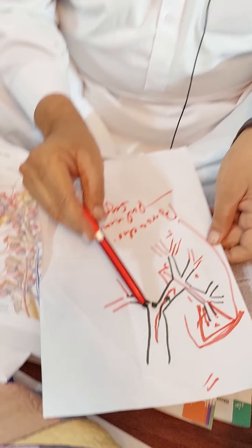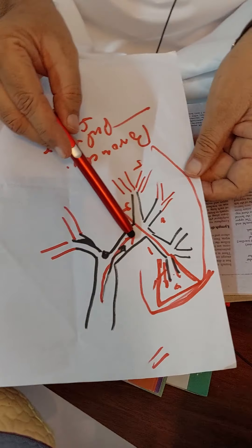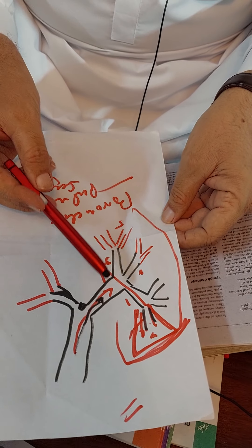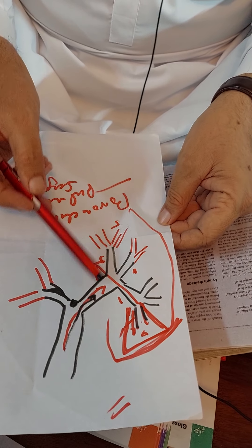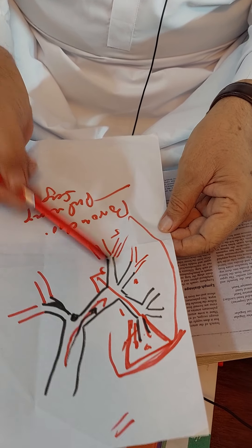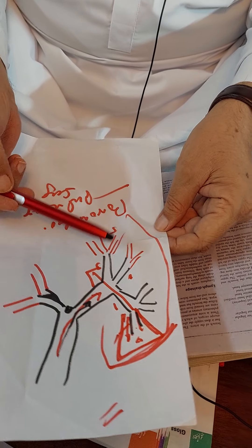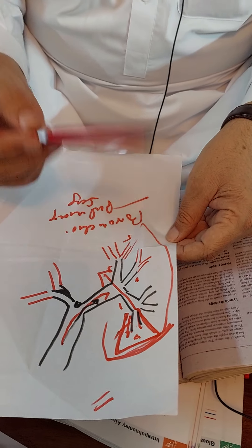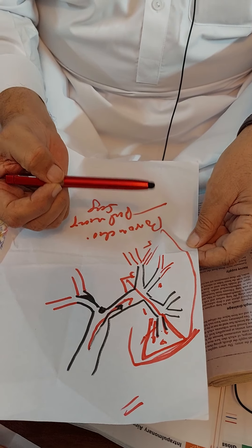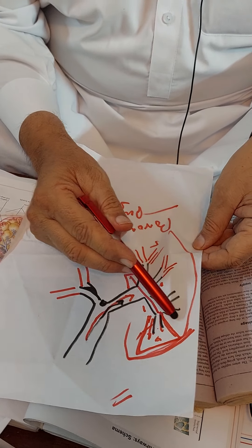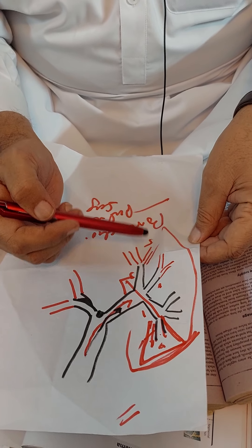The trachea divides into right and left principal bronchi. Each principal bronchus divides into lobar or secondary bronchi, and each lobar bronchus then divides into segmental bronchi or tertiary bronchi, which are surrounded by the segment of the lung.